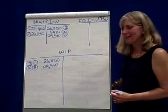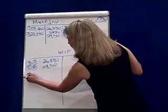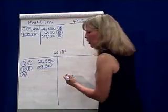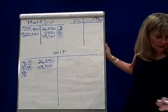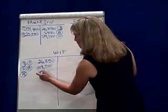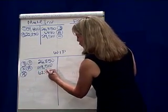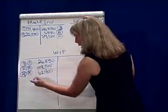it goes in work in process. So we're going to, on the 15th, debit work in process for the direct material cost of $62,900. And this all has to do with job A.